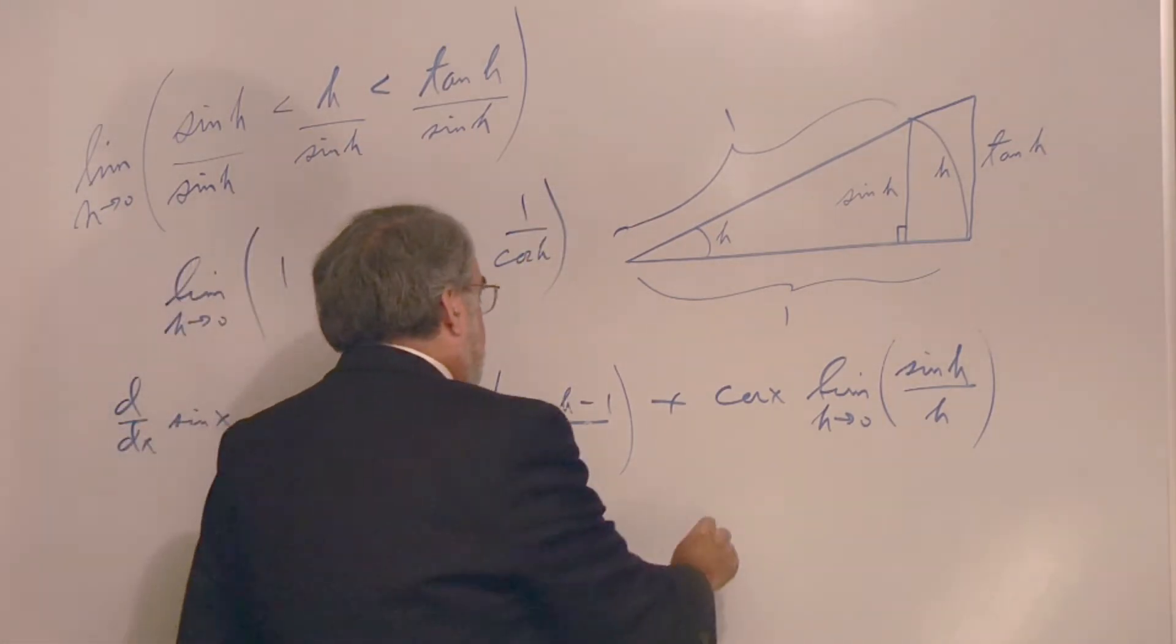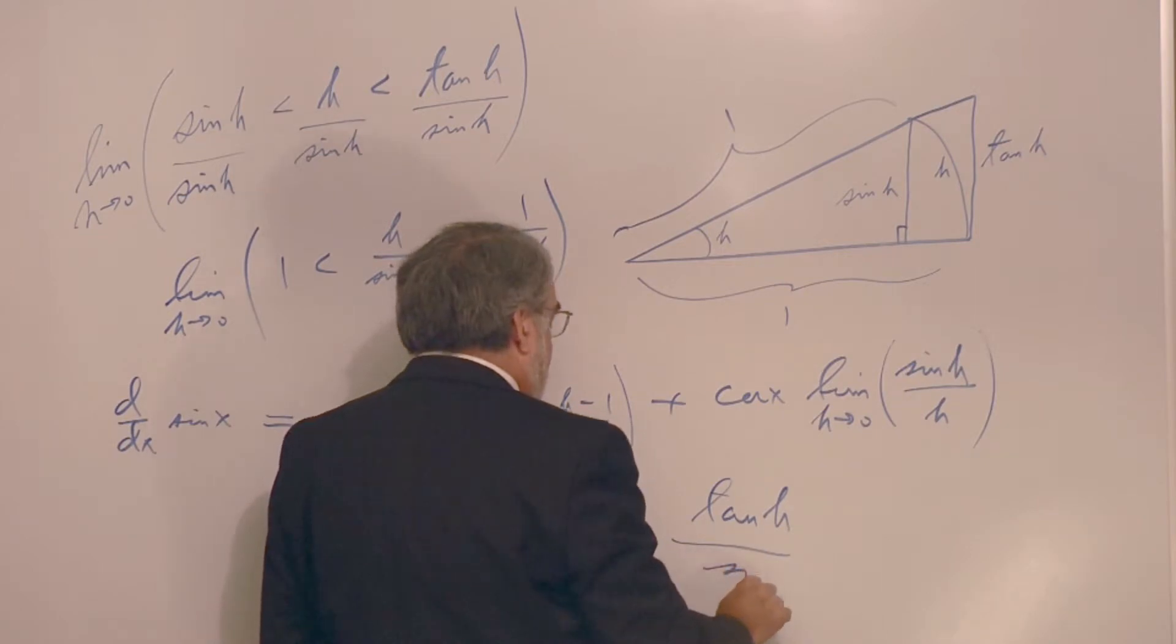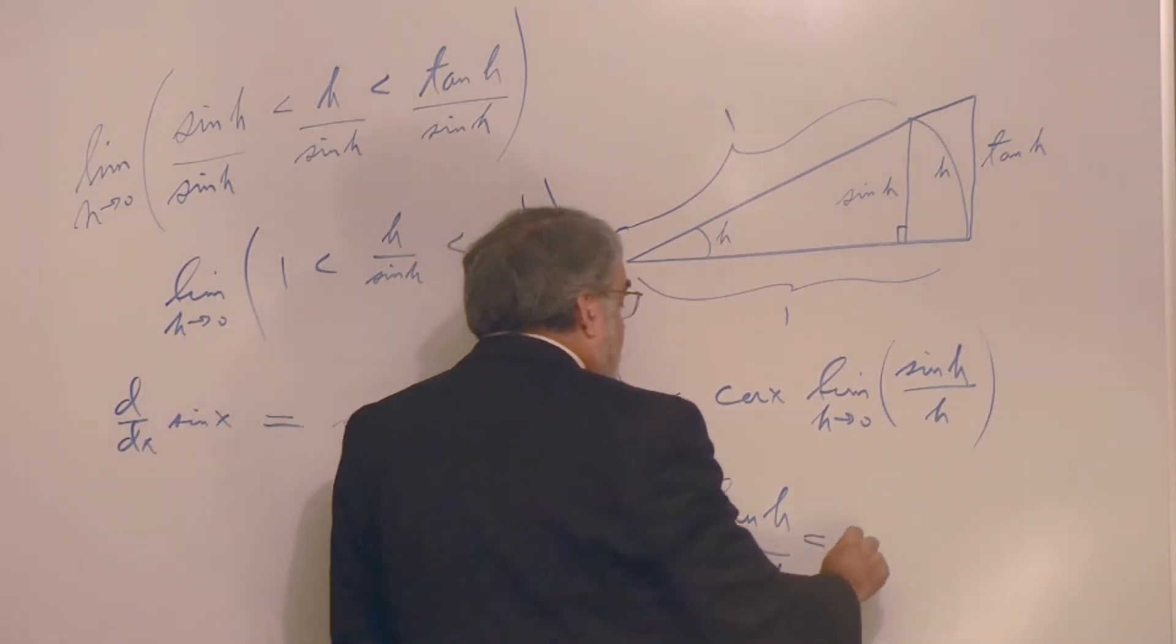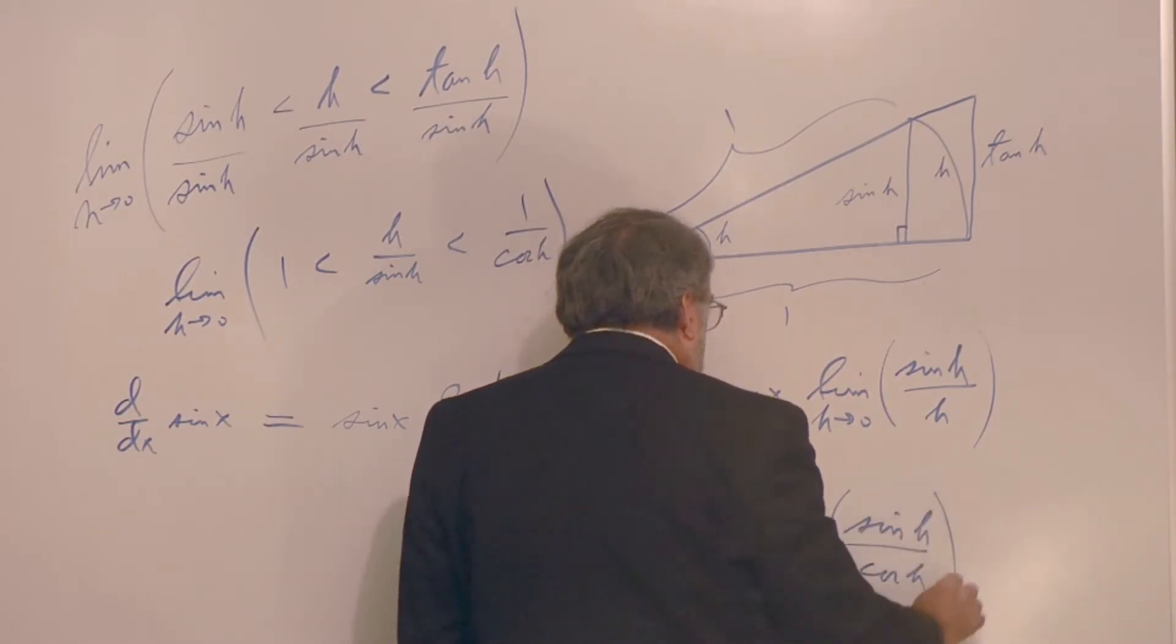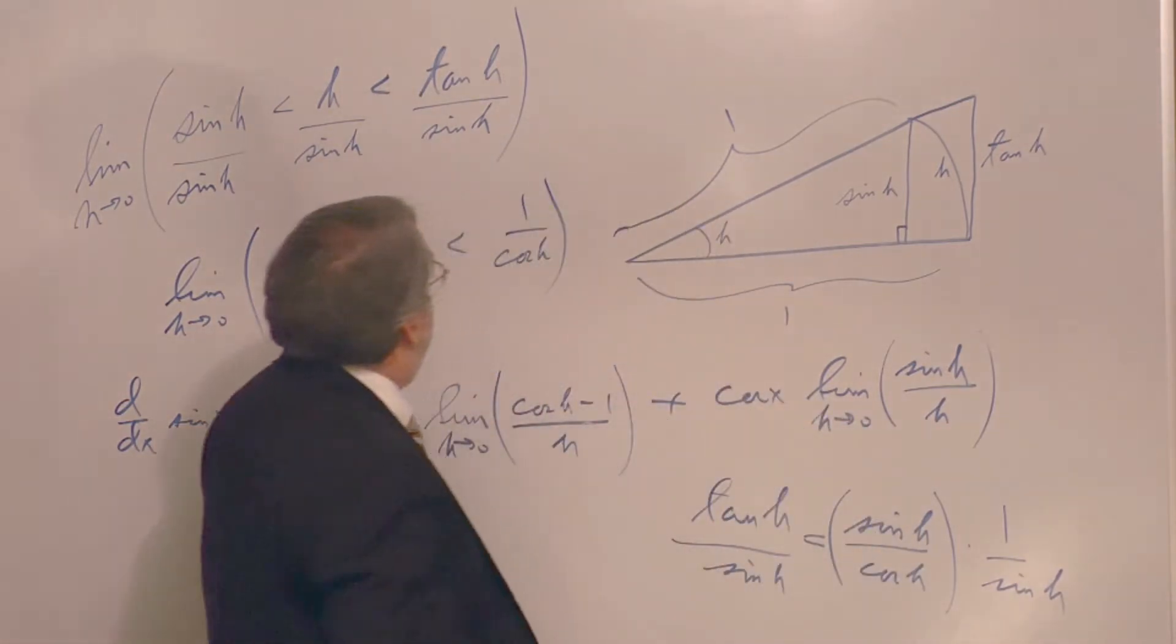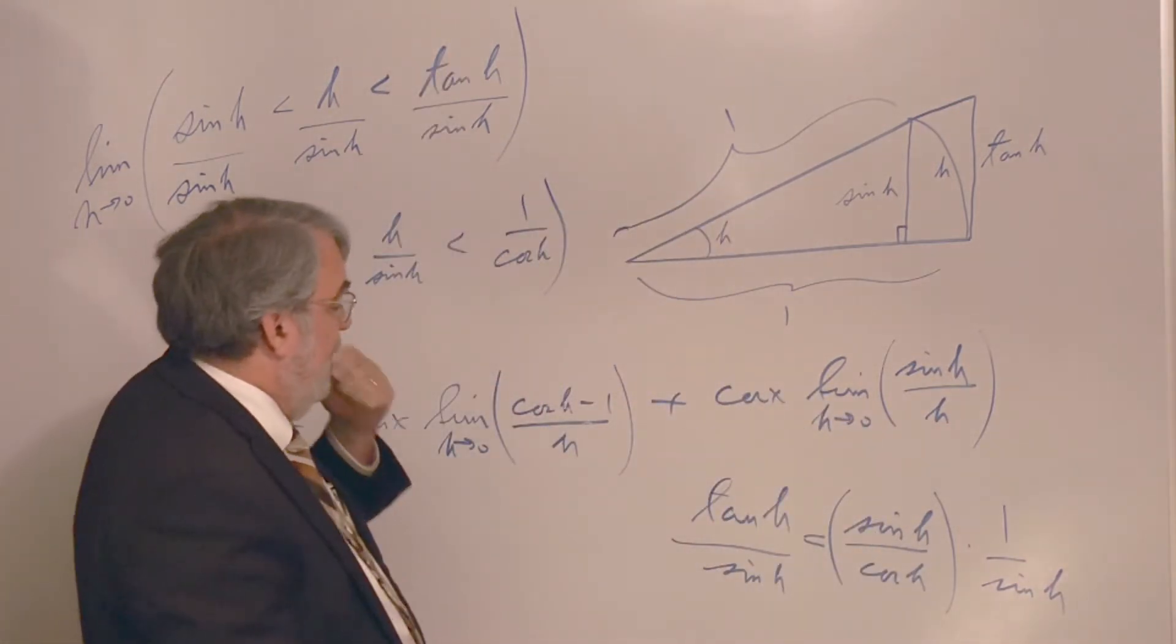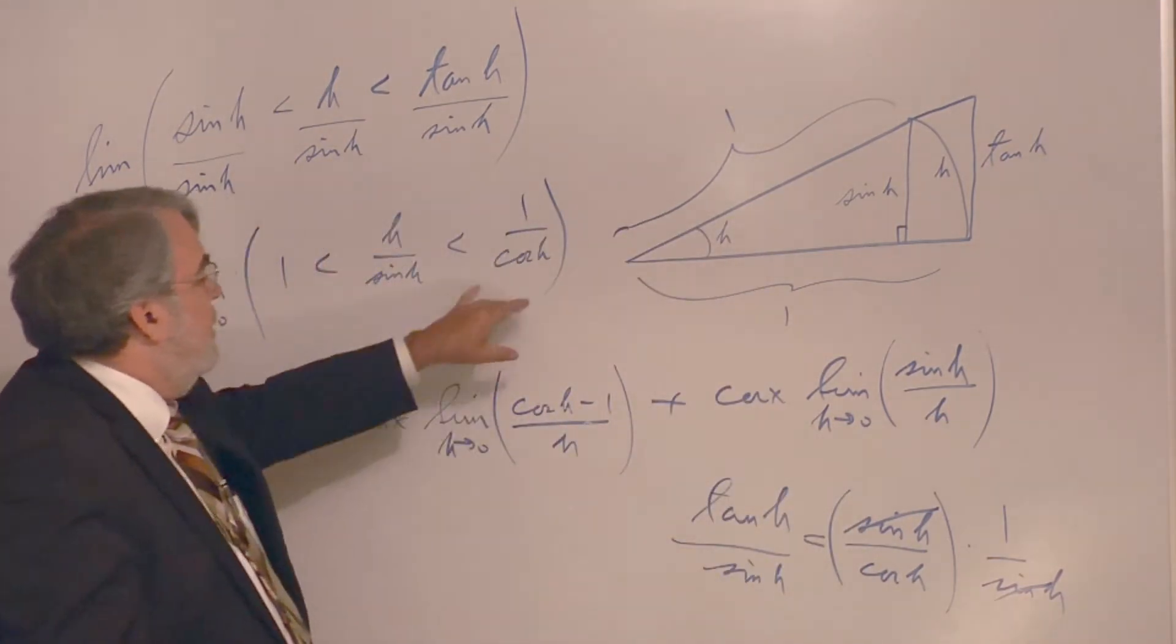Why is that true? Tangent h divided by sine h. Well, tangent is sine divided by cosine, and then I have one over sine. So, when you simplify tangent divided by sine, you get one over cosine. One over cosine h.